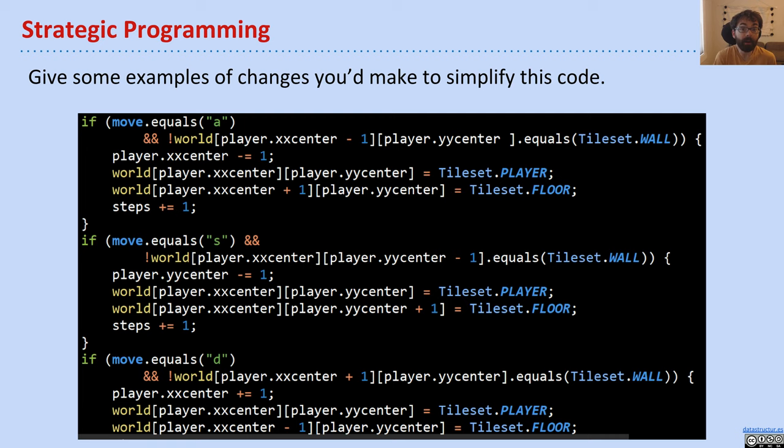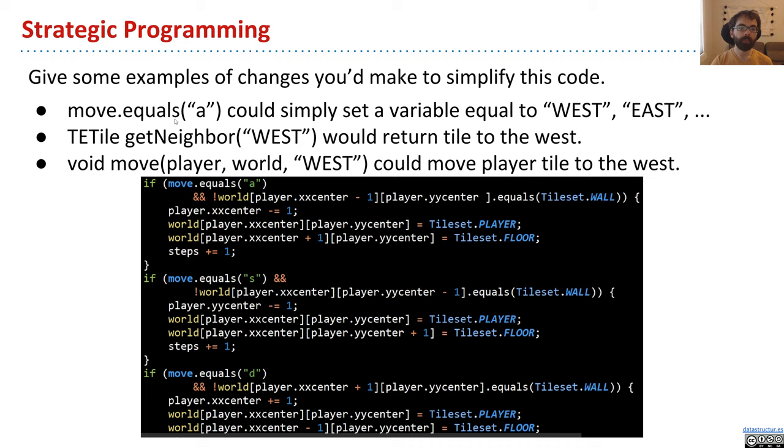So some suggestions I came up with, I'm not going to live code them here, but what we could do is, for example, the move.equals case. So when I say if move.equals, it could simply set a variable equal to west, east, or whatever else, and then once that variable was set, it doesn't have to be a string. I mean, it could be an enum, like you saw in the project two, or it could be a constant,